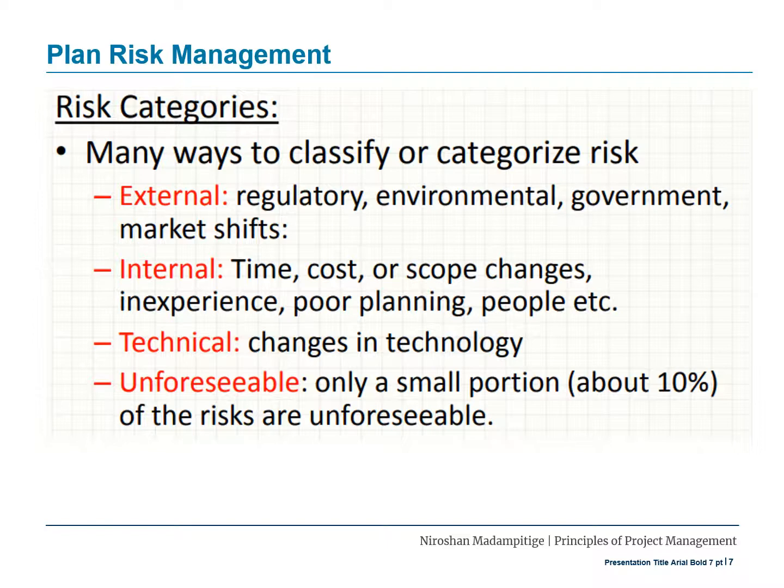You can agree on the best possible approach and actions to come up with the most appropriate response for internal risks. The third type is technical risks — these relate to changes in technology or anything to do with technology that becomes an issue in the future. The fourth type is unforeseeable risks. Only a small portion — about 10 percent — of risks are generally unforeseeable. These are risks very difficult to forecast; whatever planning you do and however deeply you analyze, you will not identify them in advance.